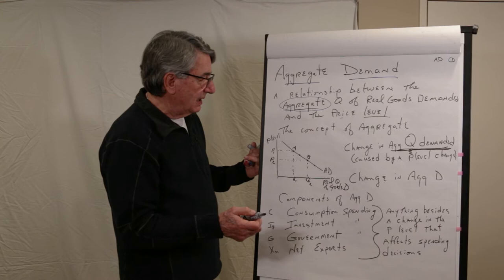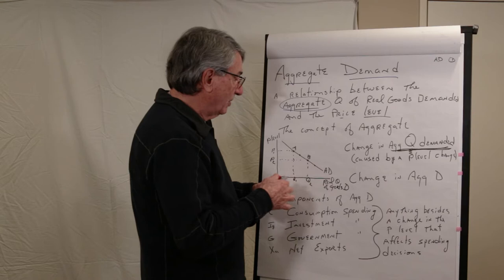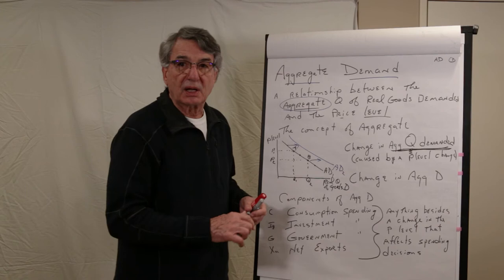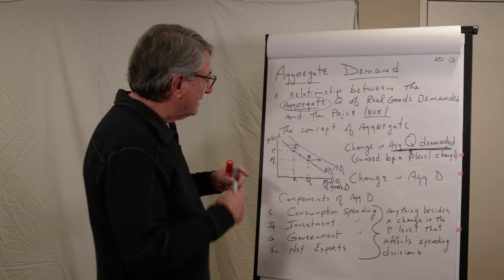What then would be a change in aggregate demand? And the answer is a change in aggregate demand would be a shift of the entire aggregate demand schedule. And what would cause this shift? At every price level, the aggregate quantity of goods demanded increases. That's a shift. And what would cause this change?